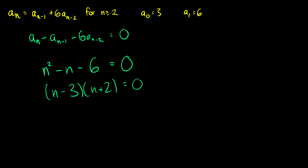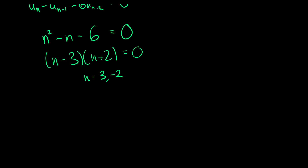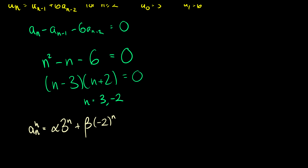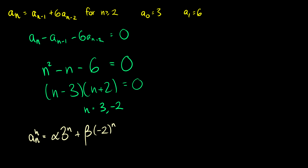So we know that r is going to be either 3 or negative 2. This tells us that our homogeneous solution a_n^(h) is going to be some constant alpha times 3^n plus another constant beta times (−2)^n. Now we just need to solve for alpha and beta. Plugging in n = 0: alpha·1 + beta·1 = 3, so alpha + beta = 3.